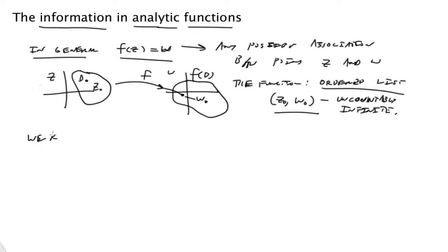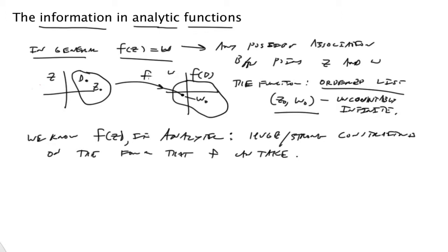But we know f(z), if analytic, there's a very strong constraint on the form that f can take. It's a very big restriction on the space of functions. If I have some mapping that's analytic, it has a very restricted class of functions. Not any function is analytic. It's a very restricted set of functions that can be analytic.